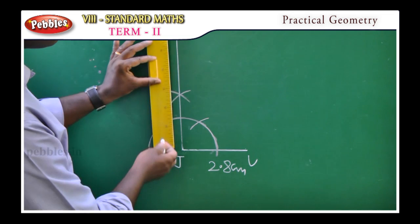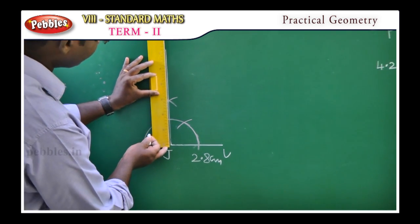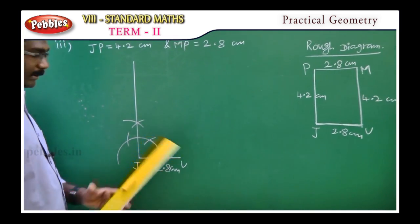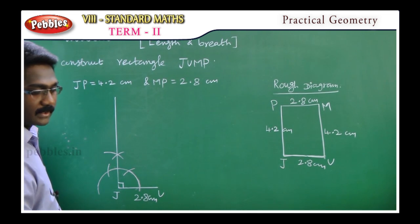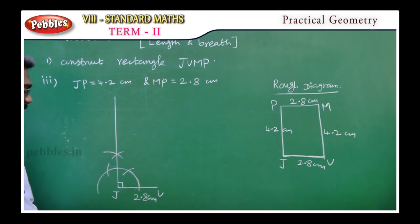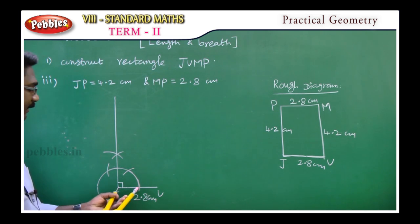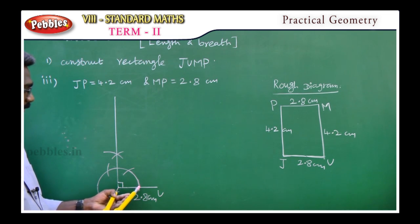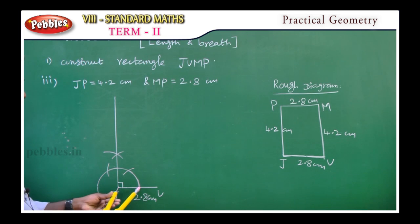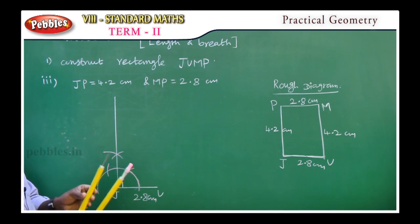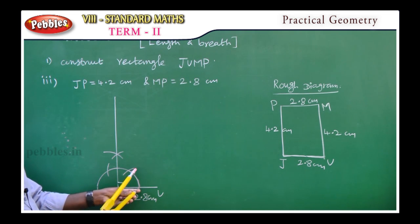Procedure: construction of a perpendicular line from point J. First, the base line has point J as center. With a convenient radius using a compass, we draw arcs on the base line. Where the arcs intersect the base line, we get two points. With changed radius, we draw further arcs above those points.